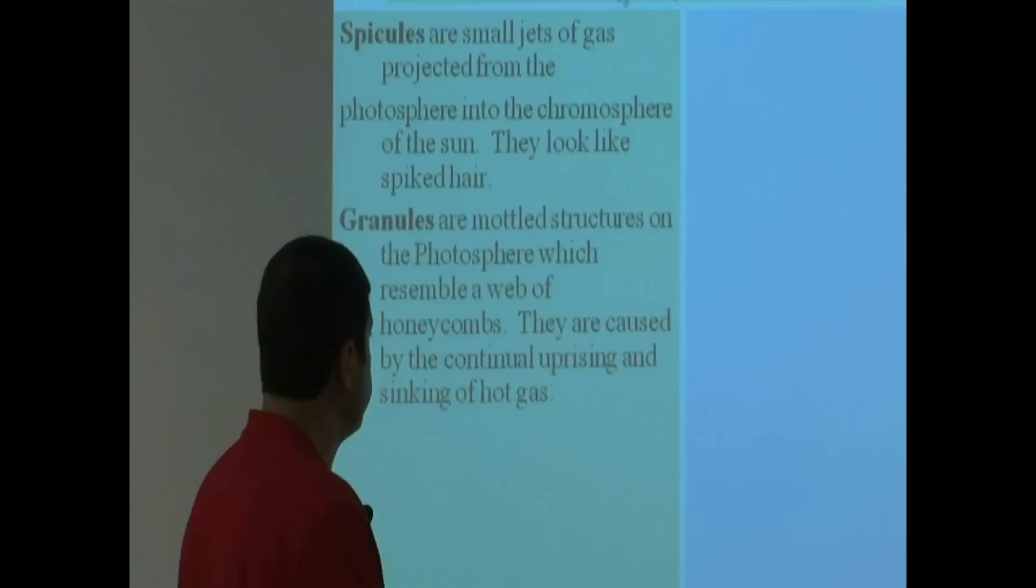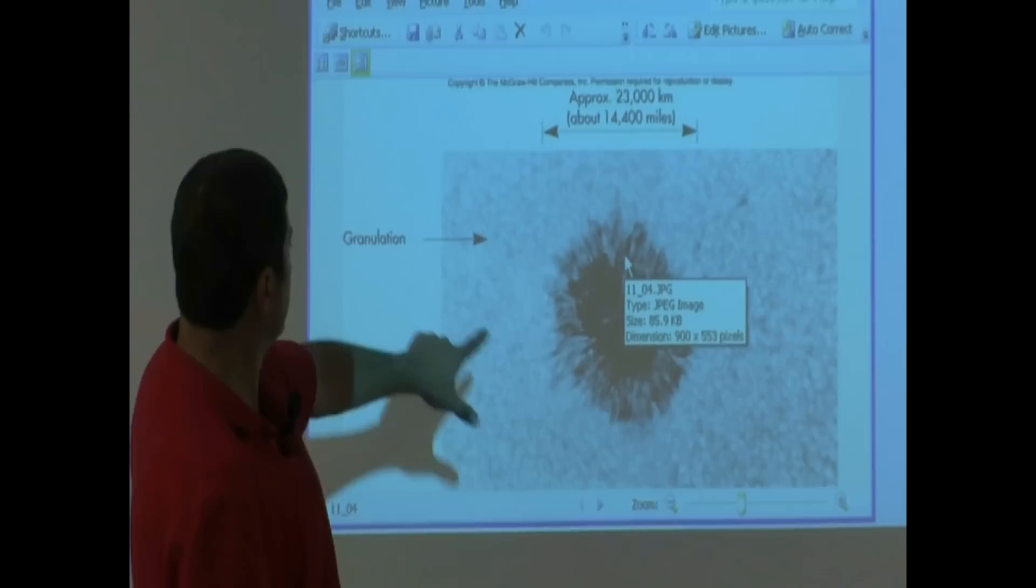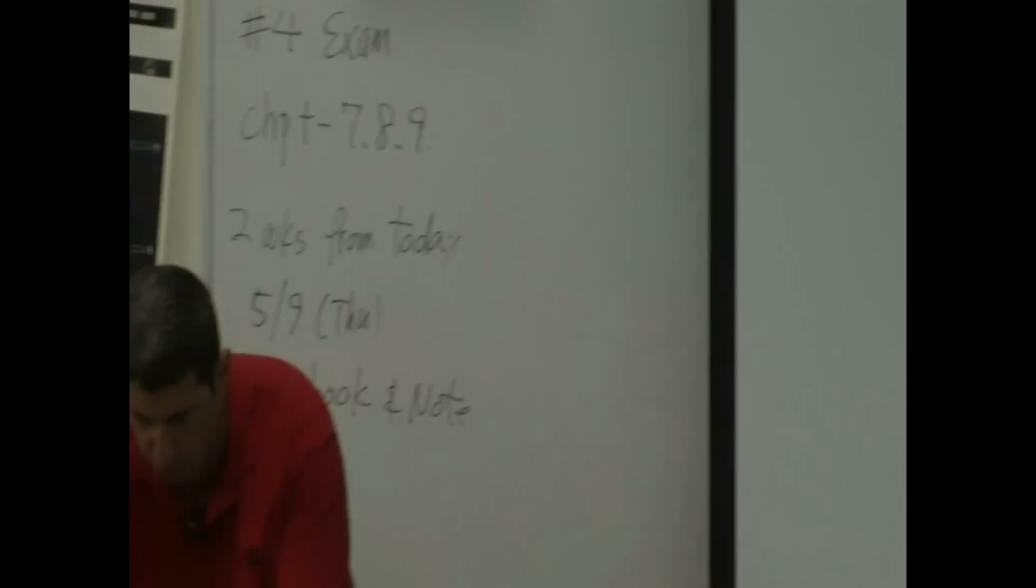You see here? These are the granules. You see, from very far, you wouldn't be able to see all this activity taking place. It would look very smooth to you. But there's all these white spots and then the darker spots. Let's see what's happening in the white and what's happening in the darker spots.